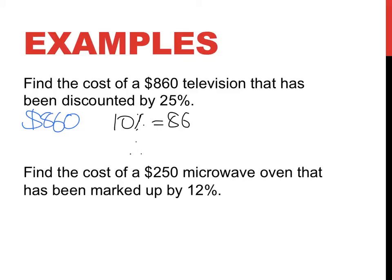Therefore, 5%, I might not put therefore, 5% is going to be half of that. So half of 80 is 40 and half of 6 is 3, so $43. And I need 25, so I need two of those and one of those. 10, 20 and 5. So 25% is going to be equal to 86 plus 86 plus 43.